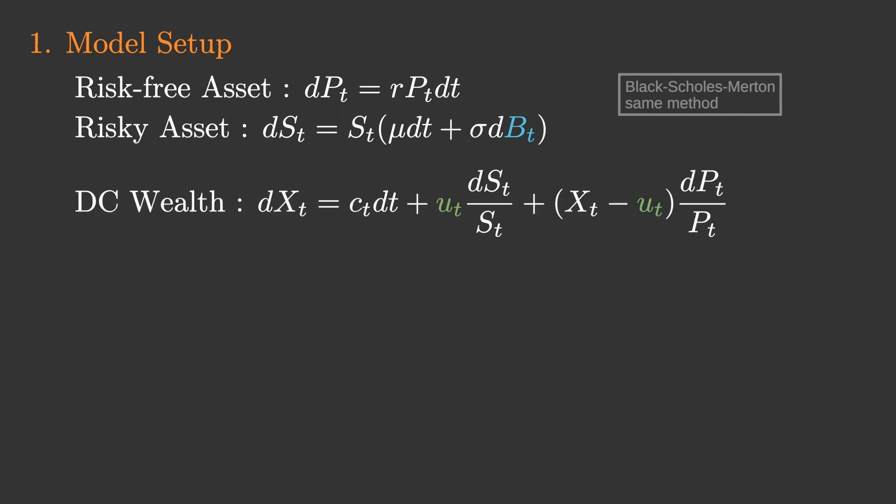The model X for the amount of DC savings shall be determined by the following dynamics. That is, the fluctuation in assets is the sum of: the contribution C per unit time dt, the return generated by the risky asset holding U at time t, and the return generated by the risk-free asset that is the remaining portion not deposited in the risky asset.